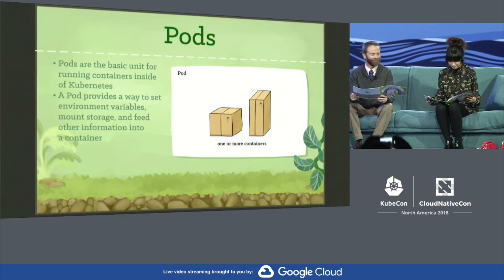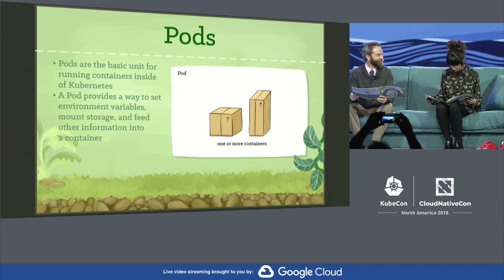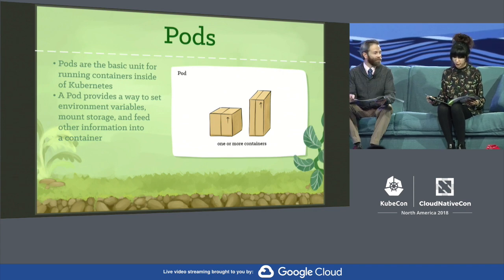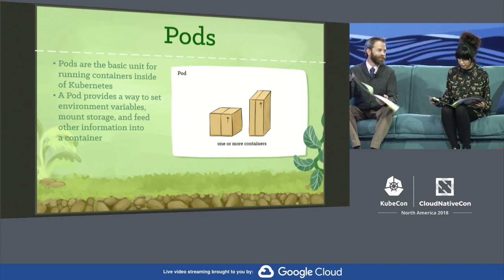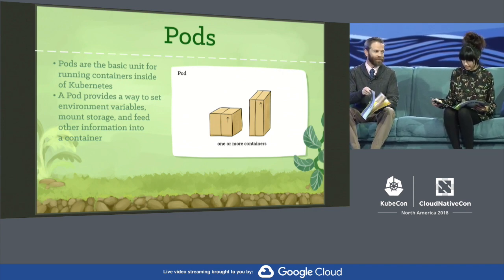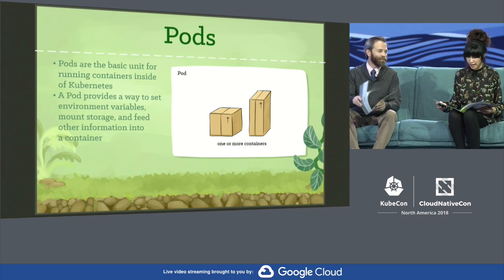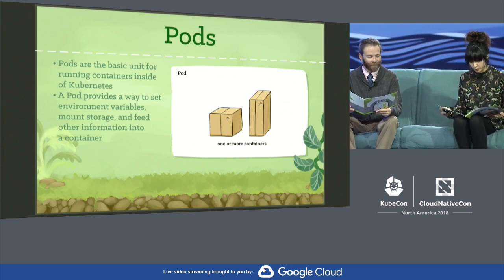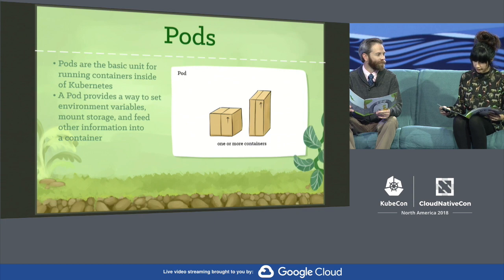Pods. In Kubernetes, pods are responsible for running your containers. Every pod holds at least one container and controls the execution of that container. When the containers exit, the pod dies too. Pods are the basic unit for running containers inside of Kubernetes, and a pod provides a way to set environment variables, mount storage, and feed other information into a container.